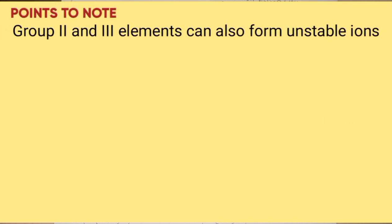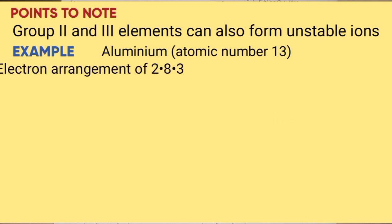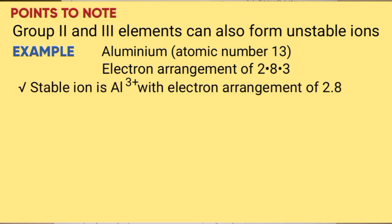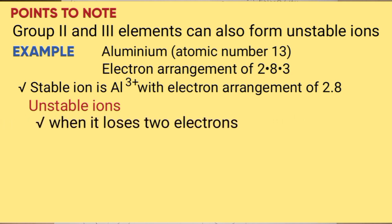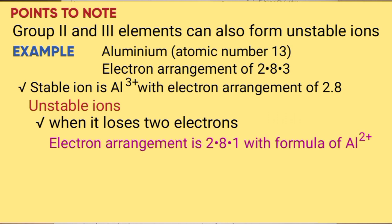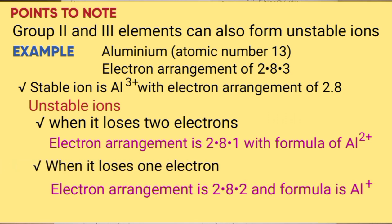Note that group 2 and group 3 elements can also form other types of ions called unstable ions. Take an example of aluminum, atomic number 13, whose configuration is 2.8.3. It has a stable ion. When it loses 3 electrons, it becomes 2.8, the formula is Al3+. It can also form unstable ions. For example, when it loses 2 electrons, the configuration becomes 2.8.1 and the formula is Al2+. When it loses 1 electron, the configuration becomes 2.8.2 and the formula is Al+.